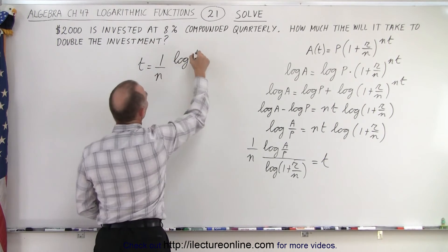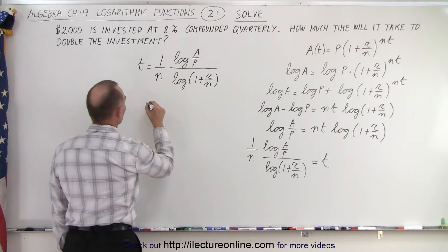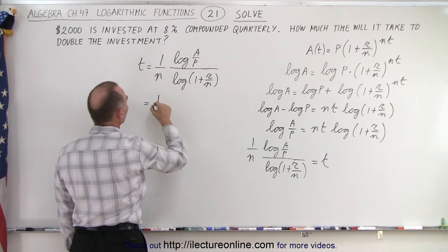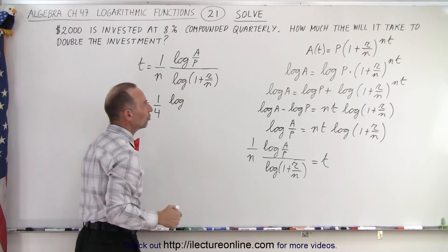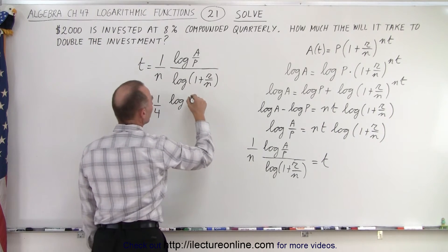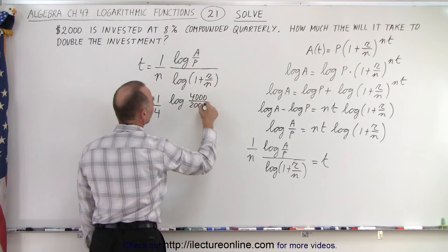So t is equal to... Now let's plug in the numbers and see what we get. So n is the number of conversions per year, quarterly, so it's 1 over 4 times the log of A over P. We started with an investment of $2,000 and we want to double it, so the amount will be $4,000 and the principal invested is $2,000.